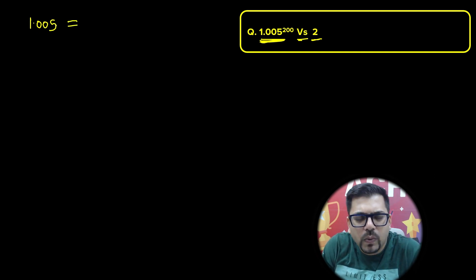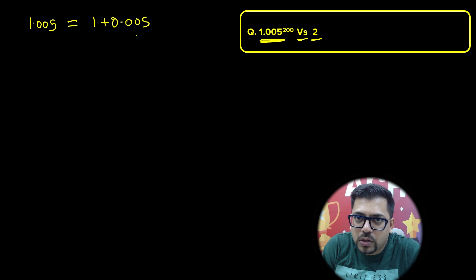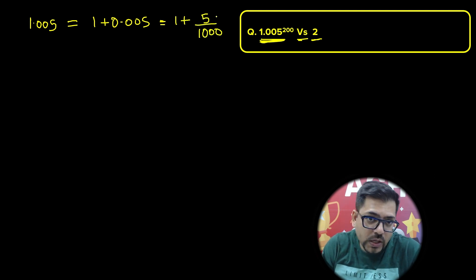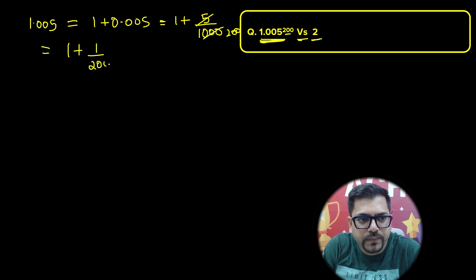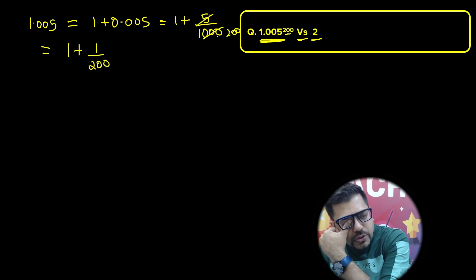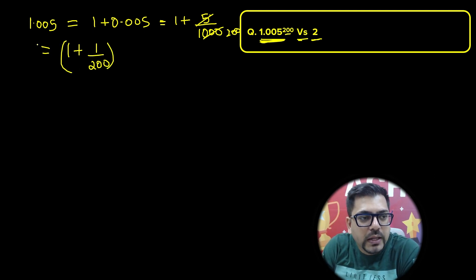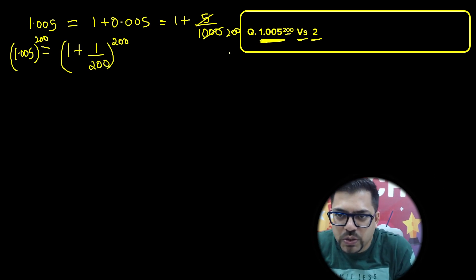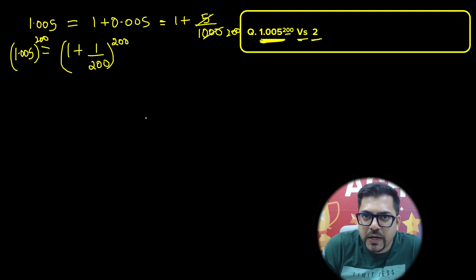Let's talk about 1.005 first. Can I write 1.005 in some other format? In fraction format it's 1 plus 5 divided by 1000. Now this 5 will cancel with 200 — I'm getting some correlation. This can be written as 1 plus 1 upon 200, since 5 cancels 1000 in 200 times. So 1.005 = (1 + 1/200), and if this number is raised to power 200, we have (1 + 1/200)^200.